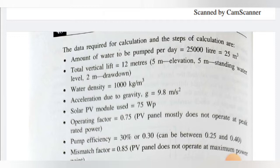Why 12 meters if the depth is 10 meters? As given: 5 meters elevation, plus 5 meters standing water level, plus 2 meters drawdown — total 12 meters of vertical lift.